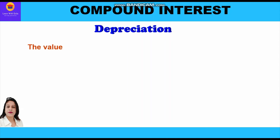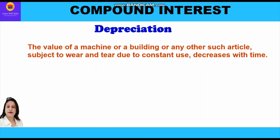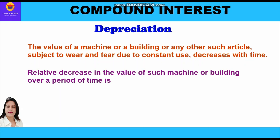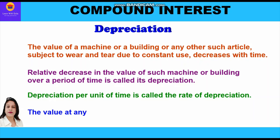The value of a machine, building, or any article subject to wear and tear due to constant use decreases over a period of time. The relative decrease in the value of such a machine or building over a period of time is called its depreciation. Depreciation per unit of time is called the rate of depreciation, and the value at any time is called the depreciated value.